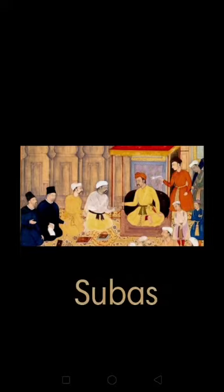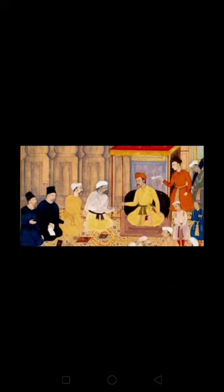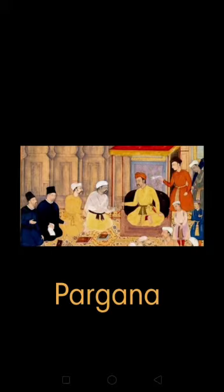His kingdom was divided into smaller parts called Subas, which were ruled by governors. These Subas were divided into Parganas. A number of villages formed a Pargana.